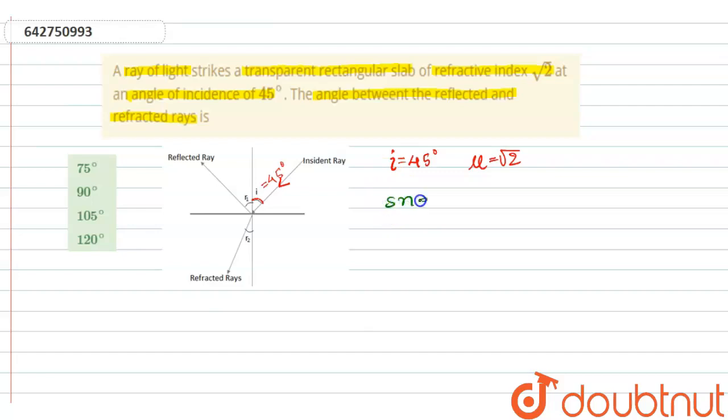From Snell's law, we know that angle of incidence is equal to angle of reflection, that is i is equal to r. This r is r₁, so this both will be 45 degrees. For refraction, that is r₂...